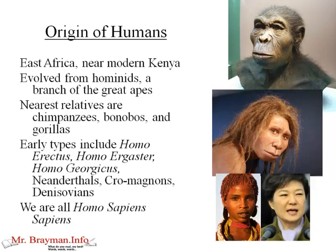Early types of hominids that led to human beings — or were genetic branches that branched off but didn't become humans — include Homo erectus, Homo ergaster, Homo georgicus (the reconstruction you see in the middle there), Neanderthals, Cro-Magnons, and Denisovans. There's a lot of very interesting work being done in this area right now, and scientists are discovering new branches of hominids all the time. It's important to note that we're all Homo sapiens — no matter what our race or ancestry. Homo sapiens sapiens is the even more specific name for our species.